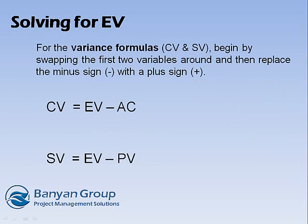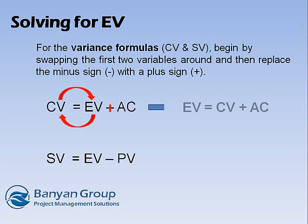For the variance formulas — cost variance and schedule variance — begin by swapping the first two variables around and then replace the minus sign with a plus sign. This gives you the reformatted equation. Do the same for schedule variance.